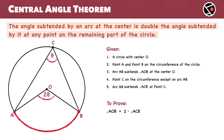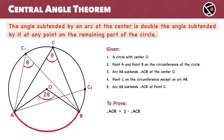This holds for any point on the circle as long as this point is not on arc AB. Let's choose another point C1 — the angle subtended by arc AB at point C1 will also be theta. Similarly, at another point C2 on the circle, angle AC2B will still be theta.